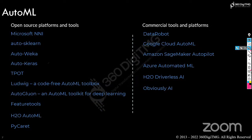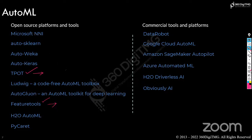There are a lot of open source platforms and tools such as Microsoft NNI, Auto-Sklearn, Auto-WEKA, Auto-Keras, TPOT, Ludwig, Auto-Gluon, and Featuretools. Out of all of these, we are going to walk through TPOT end-to-end with hands-on, and also look at Featuretools at a high level.